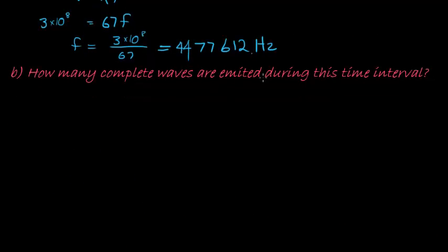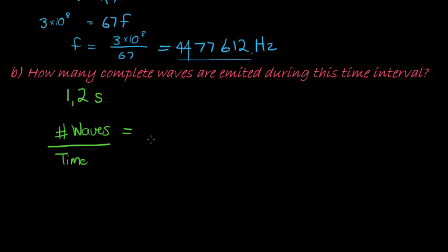How many complete waves are emitted during this time interval? So this is how many goes by per second. But we have 1.2 seconds. So the number of waves that pass by per second, per time, is called the frequency. That's what frequency is. Waves per time.